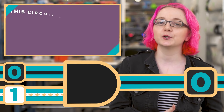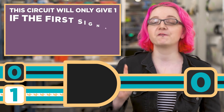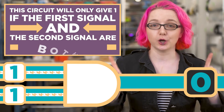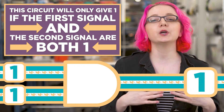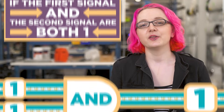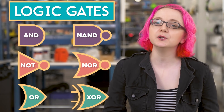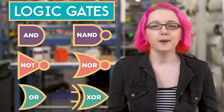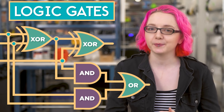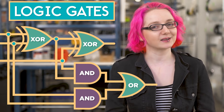This circuit will only give you a one if the first signal and the second signal are both a one, so we call this circuit AND. There are many small circuits like this that perform simple logical calculations. By connecting these circuits together, we can make more complex circuits that perform more complex calculations.